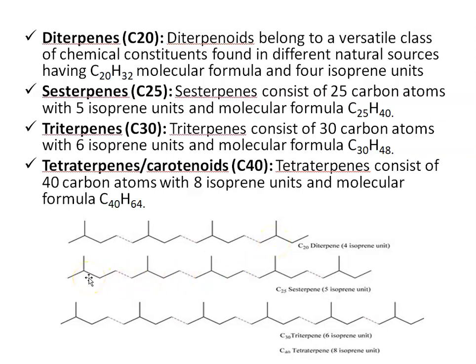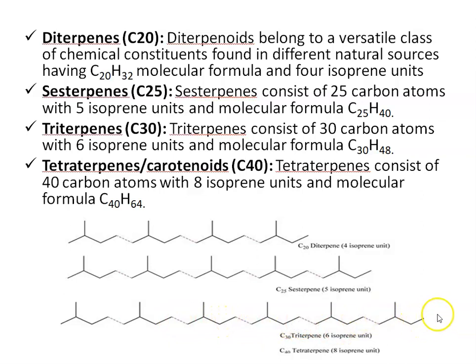Sesterterpenes consist of 25 carbon atoms with 5 isoprene units and their molecular formula is C25H40. Then triterpenes — triterpenes consist of 30 carbon atoms with 6 isoprene units and their molecular formula is C30H48. The last class is tetraterpenes, also known as carotenoids, which consist of 40 carbon atoms with 8 isoprene units, and their molecular formula is C40H64.